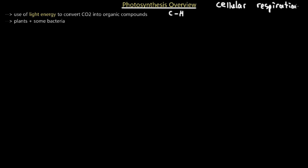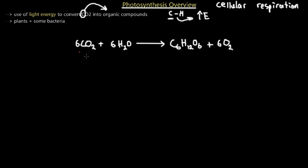In cellular respiration, when humans and animals use these organic compounds, they break down the carbon-hydrogen bond, which releases lots of energy. This is the significance of plants and bacteria converting light energy and getting electrons from water to fixate carbon dioxide from the atmosphere. They use the carbon in CO2 to synthesize organic compounds, because carbon forms the backbone of organic molecules.